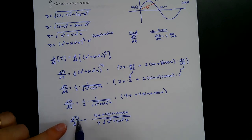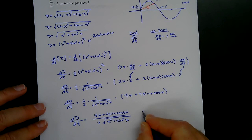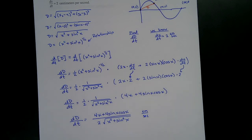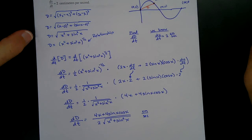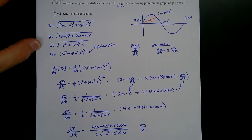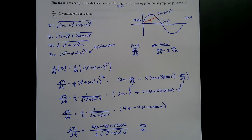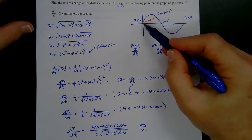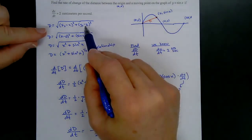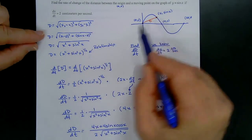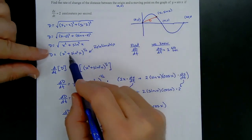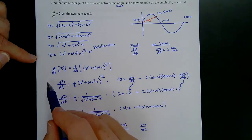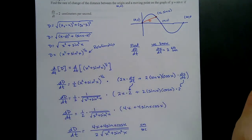Of all today's examples, this is probably the hardest — the complexity is in the derivative work. The key is that the relationship comes from the distance formula, and by substituting the coordinates and taking the derivative with respect to time, we get dD/dt on one side and dx/dt on the other.